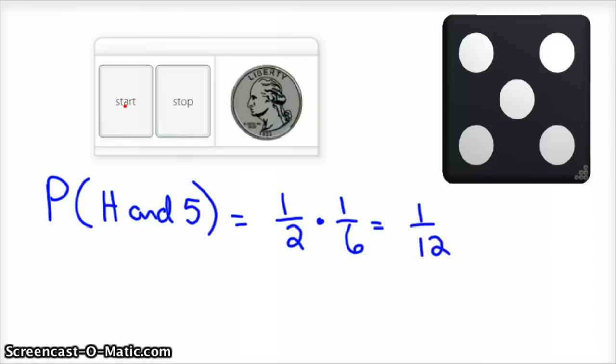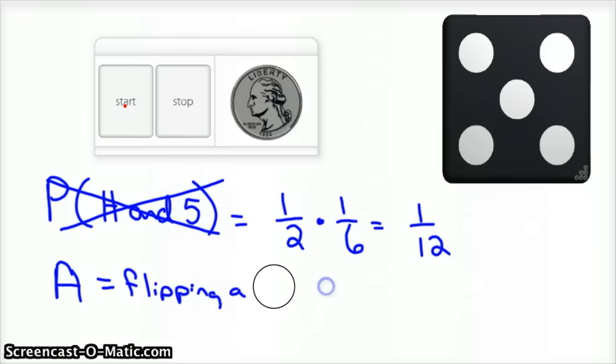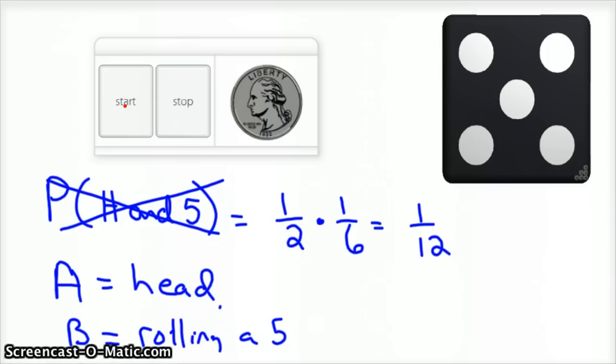And so I guess if you were going to do this nicely, you would probably define your events. So A would be flipping a head, or getting a head. So A is head, and B is rolling a five on a dice. And so that's one twelfth. And so those are independent events.